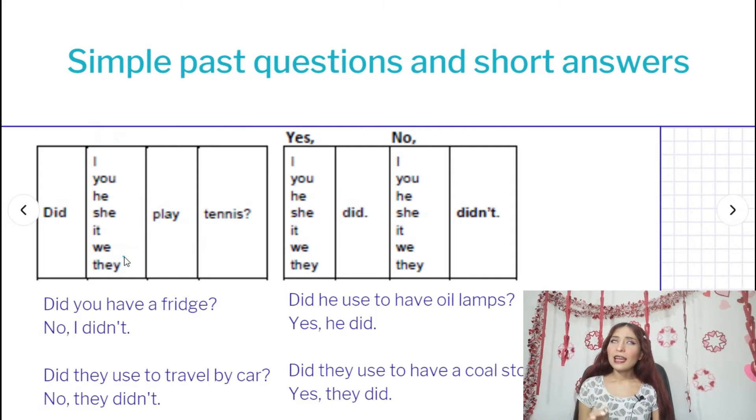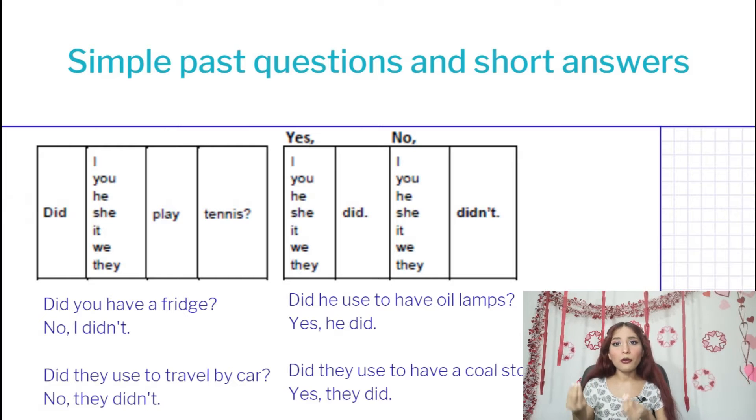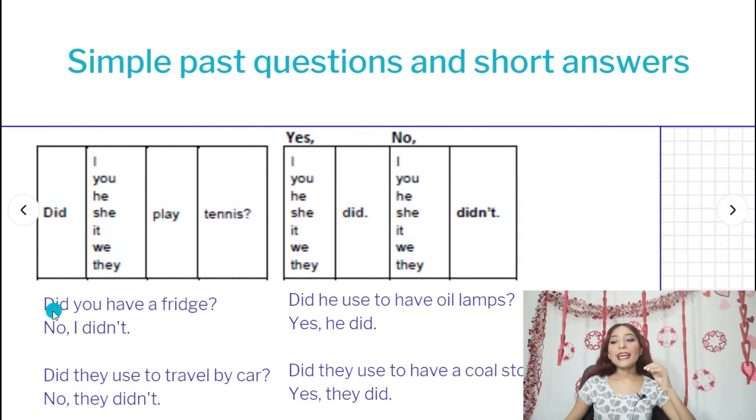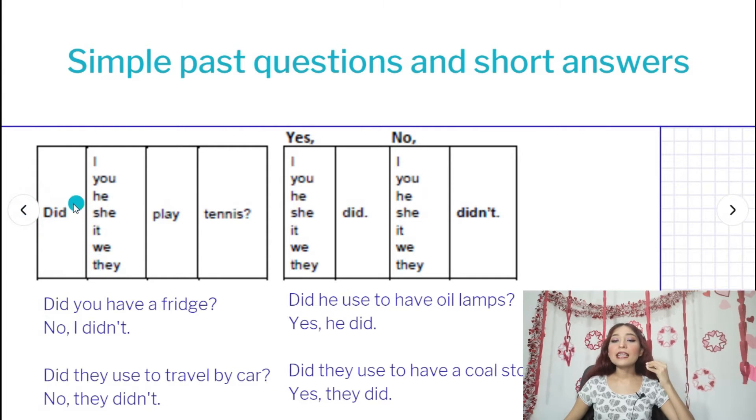And then you're going to write the verb in present. But teacher, why is the verb in present if we are making questions in past? The reason is that we are using the simple past in the auxiliary 'did.' This auxiliary is already in past.